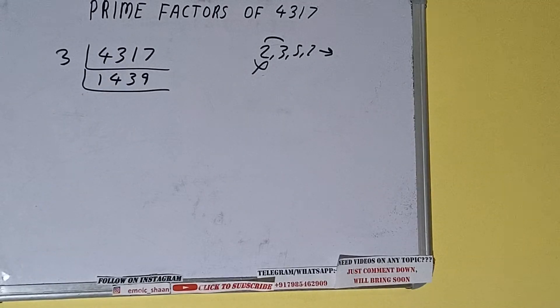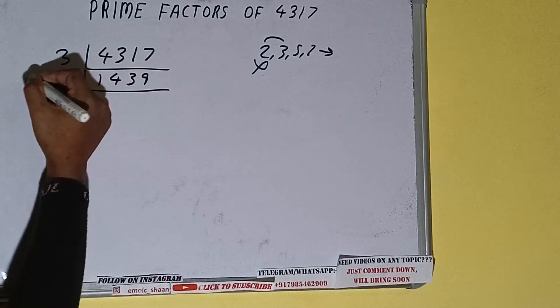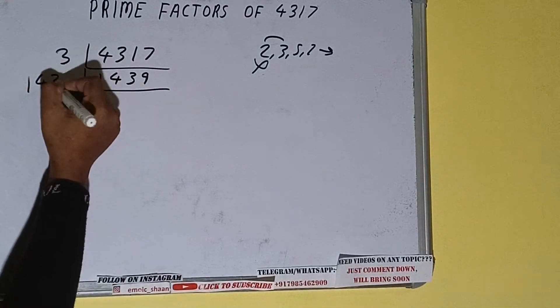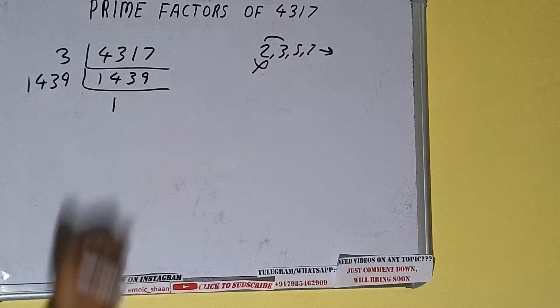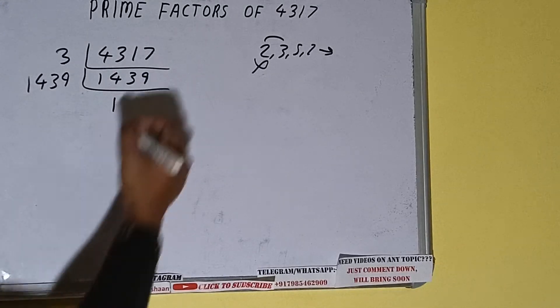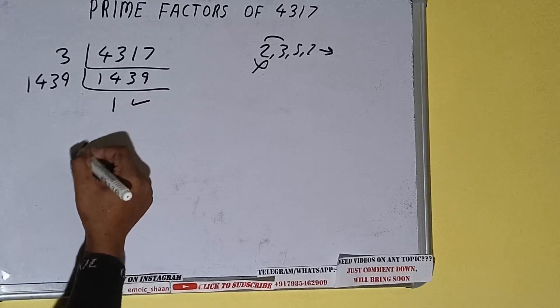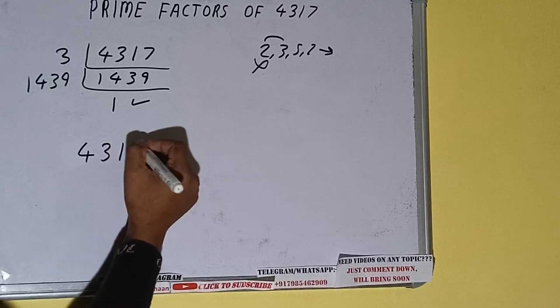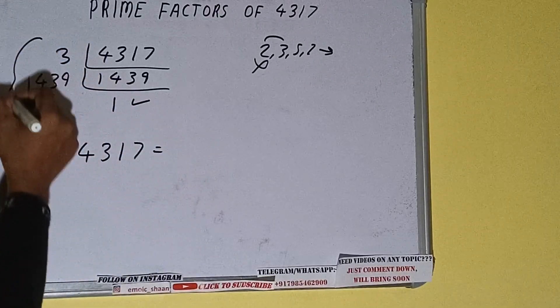Because 1439 is also a prime number, so it is only divisible by itself. That is 1439. And once we do so, we'll be getting 1. Once we get 1, we need to stop and do one last thing: prime factors of 4317 equals whatever we have on the left-hand side, that is 3 times 1439. That will be the answer.